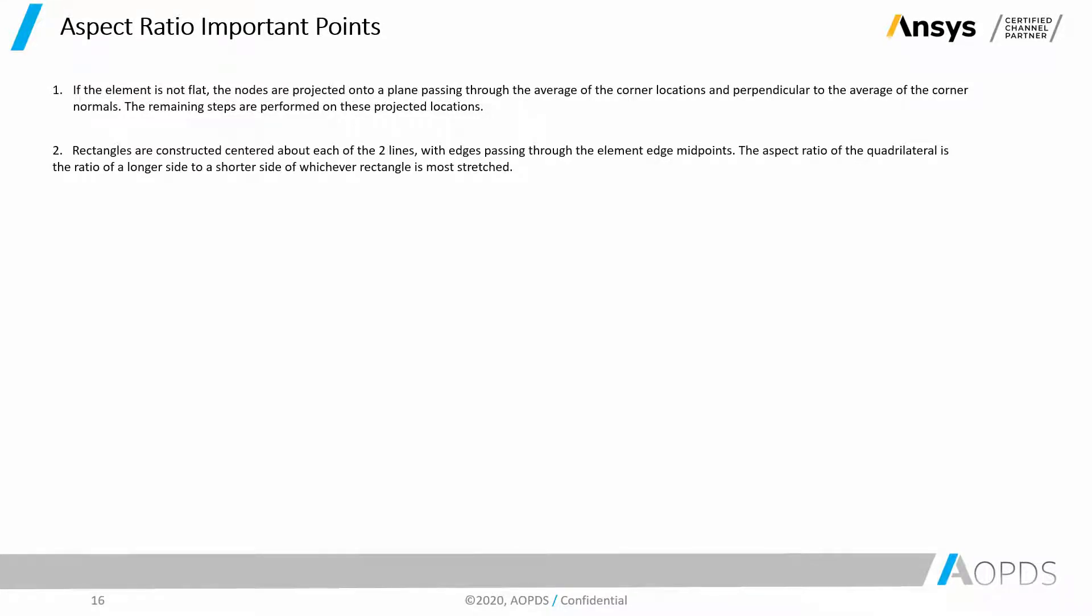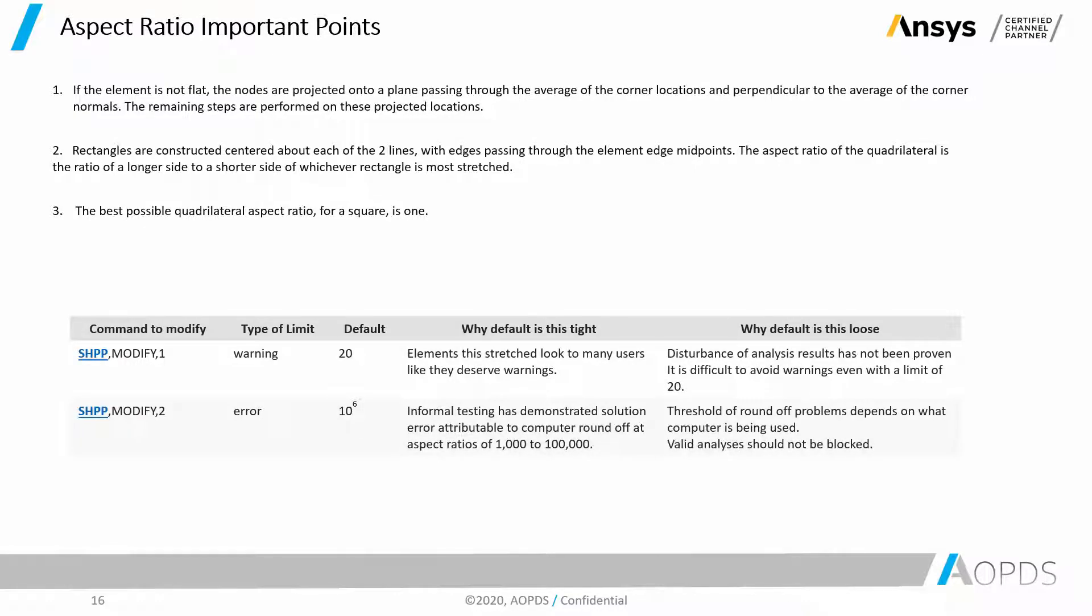Number two. Rectangles are constructed centered about each of the two lines with edges passing through the element edge midpoints. The aspect ratio of the quadrilateral is the ratio of the longer side to the shorter side of whichever rectangle is most stretched. And number three. The best possible quadrilateral aspect ratio for a square is one.